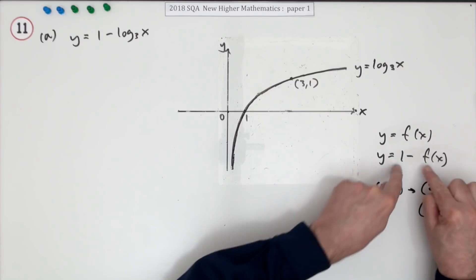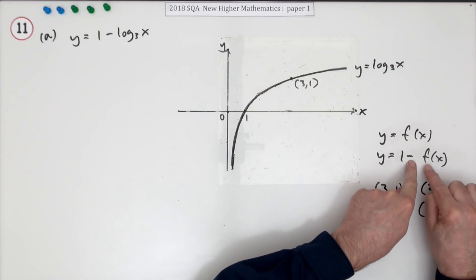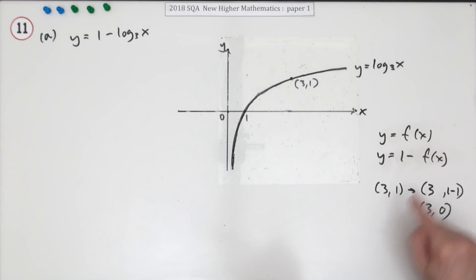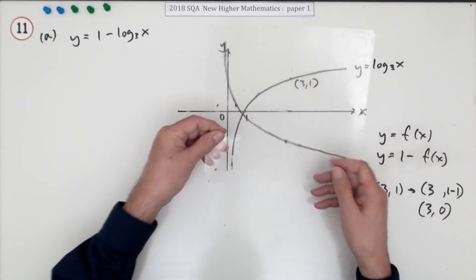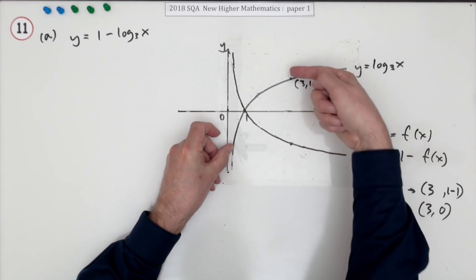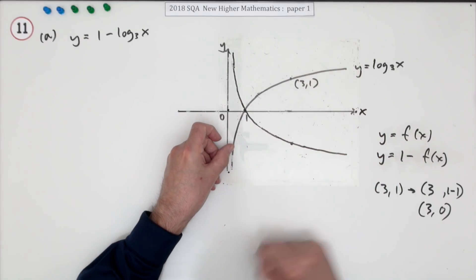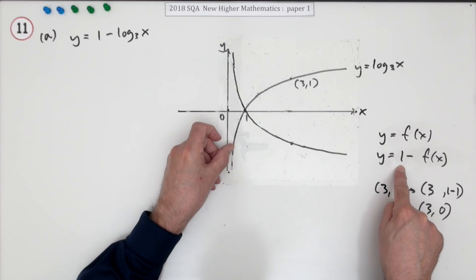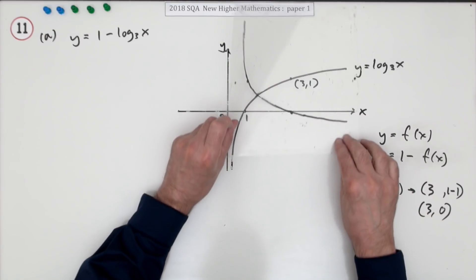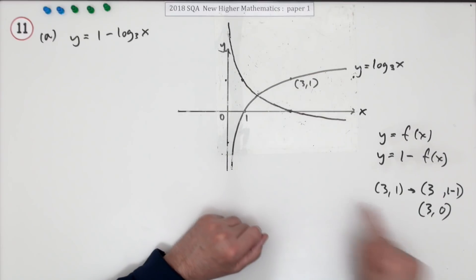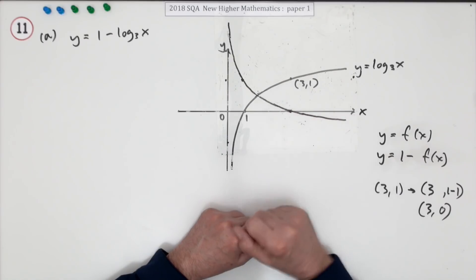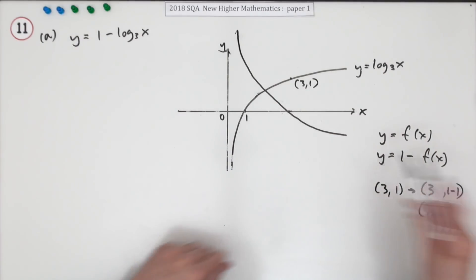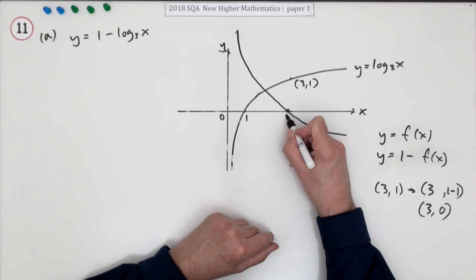Negative f of x means flip it up — the new y coordinates are the negatives of the originals, so flip it about the x-axis. Everything above goes below and everything below goes above. Then plus 1 means add 1, so it all shifts up 1. This new graph should cut the x-axis at (3, 0), so it's cutting at x equals 3.